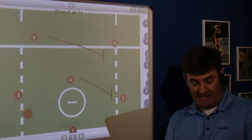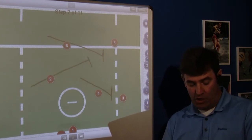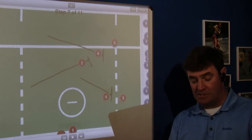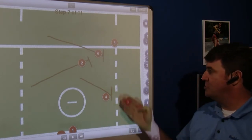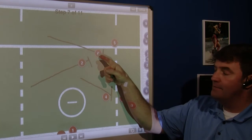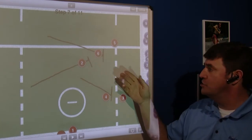You see the pass get thrown and number four on the crease. He also goes and picks away. Now you have all the action here on this side of the field. Number six ends up ultimately being your shooter.